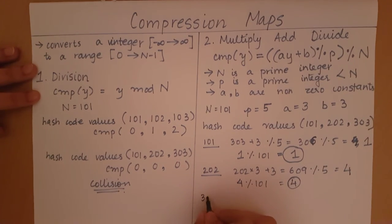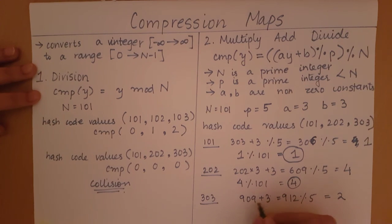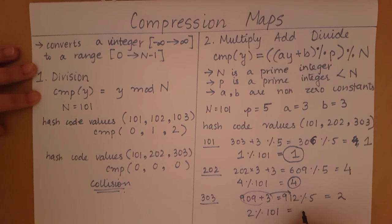Now we see 303. 303 times 3, which will give me 909 plus 3, which will give me 912. Now this mod 5 is going to equal 2. So this is the value we are going to insert here. 2 mod 101 is equal to 2.